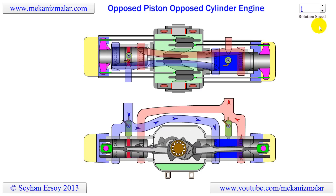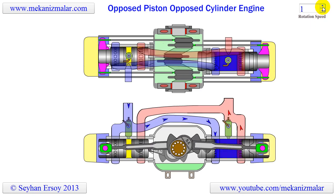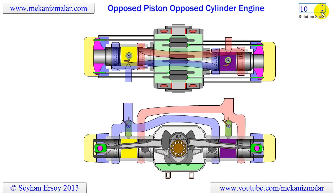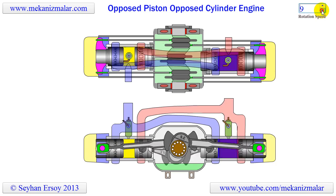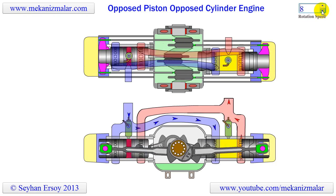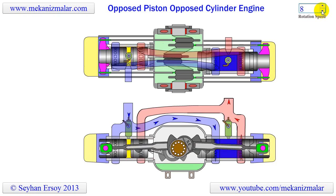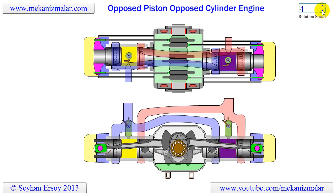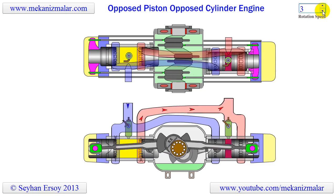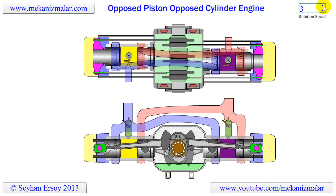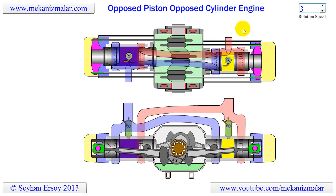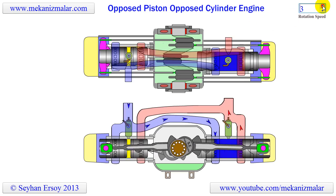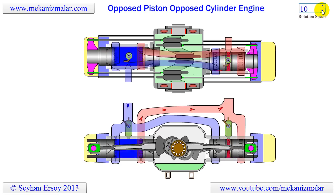Welcome to the video tutorials of Mekonismiller. Since the early ages of four-stroke internal combustion engines, there have been numerous attempts to replace them. One of the well-known candidates was the Wankel rotary engine. Since it is not widely used, we may not consider it as a successful competitor to the four-stroke piston engine.